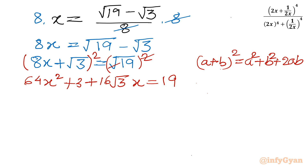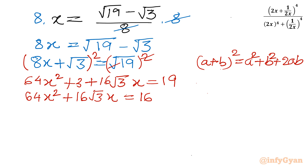Taking away 3 from both sides: 64x² + 16√3·x = 16. Since the equation is divisible by 16, dividing both sides by 16 gives 4x² + √3·x = 1.